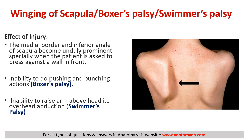This condition is also known as boxer's palsy because the person cannot perform pushing and punching actions. It is also known as swimmer's palsy because the person has inability to raise the arm above the head — overabduction is not possible and protraction is not done — and these movements are needed for swimming.